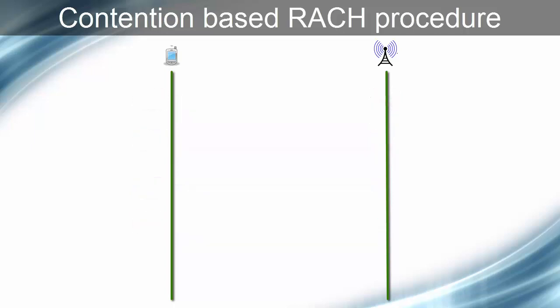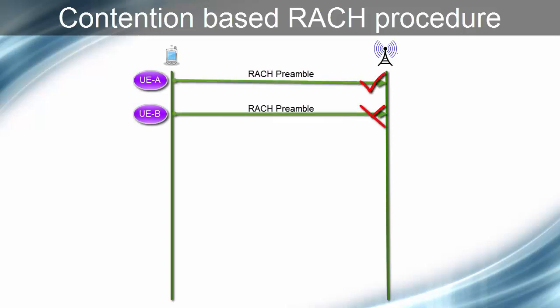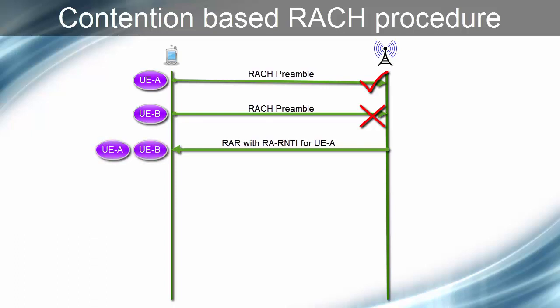The second possibility is that eNodeB is able to decode preamble only from UE-A. In this case, eNodeB will send RAR in downlink with RA-RNTI for UE-A. But interestingly, RA-RNTI will be the same for both UEs, UE-A and UE-B, because both UEs have transmitted preamble at the same time. So, although RAR is intended for UE-A, both UEs will decode RAR and work on it. Both UEs will acquire the same TC-RNTI present in the RAR. Note that UE-B still does not know that eNodeB was not able to decode its preamble.